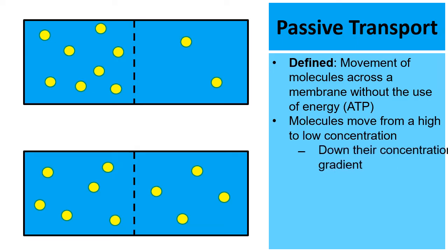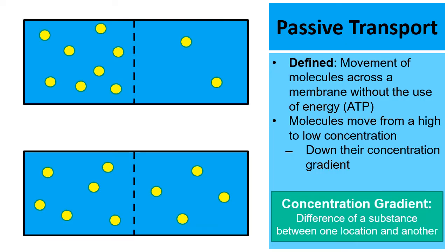When we say molecules move from a high to low concentration, we can also say they move down their concentration gradient. These two phrases mean the same thing: from high to low concentration, and down their concentration gradient. A concentration gradient is really the difference of a substance between one location and another.